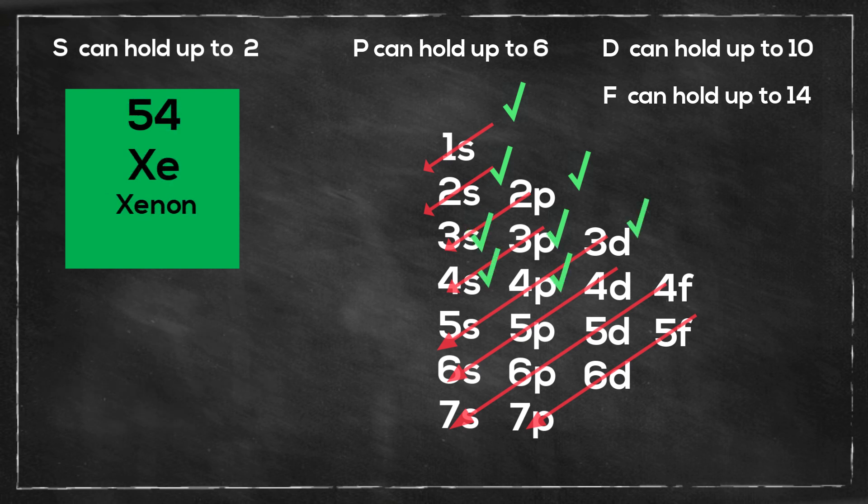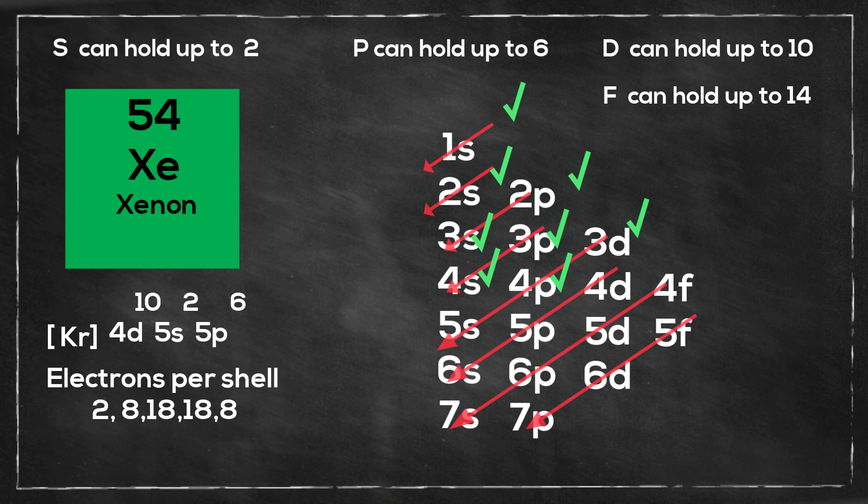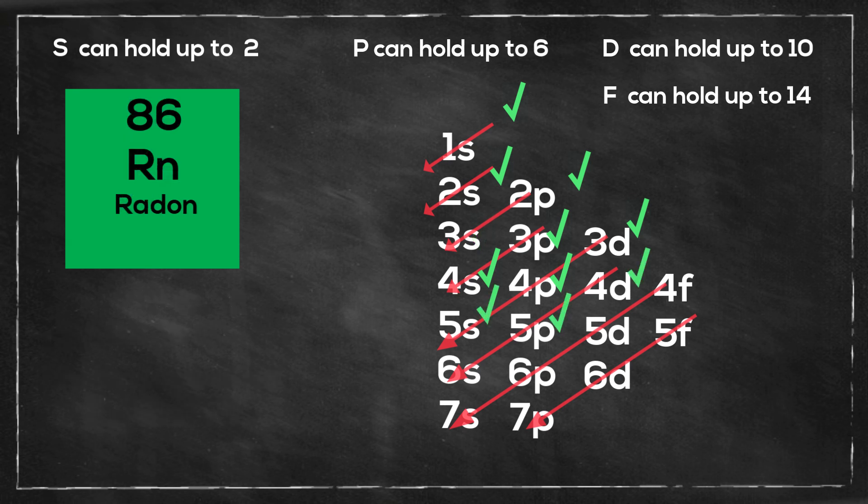Next you have xenon and that is krypton plus 4d10 5s2 5p6 electrons per shell 2 8 18 18 8.